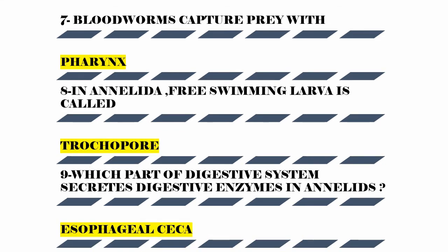The seventh question is: bloodworms capture prey with what? Bloodworms capture prey using their pharynx. They use their pharynx to capture prey.